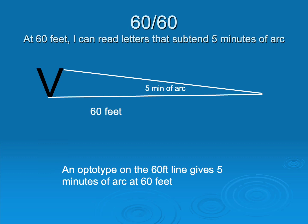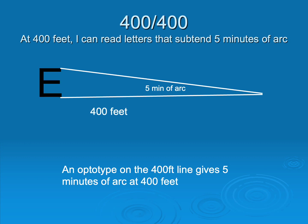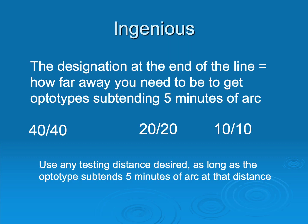If you back them up 60 feet away and they can read the 60-foot line, they are 60/60 — still reading letters of five minutes of arc, the same as 20/20. If you back them up 400 feet and they can tell that the big E is a big E, they're reading optotypes of five minutes of arc just as if they were 20 feet away reading the 20/20 line. So 400/400 is perfect vision. The beauty of this chart is it doesn't matter what testing distance you use as long as it's listed on the right side of the chart. It's all based upon five.